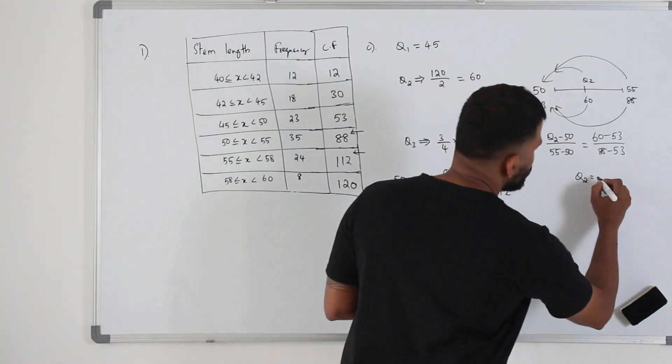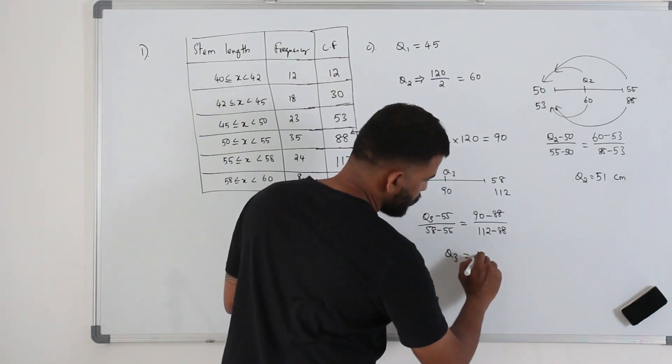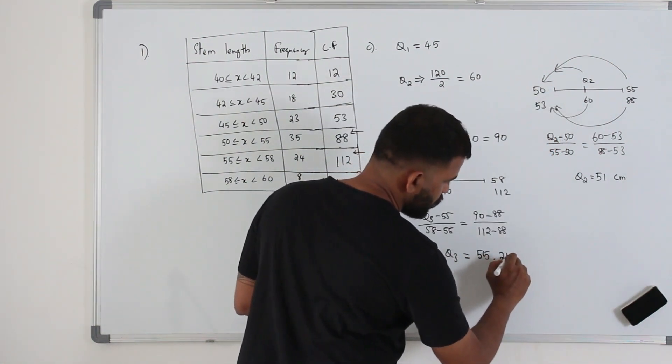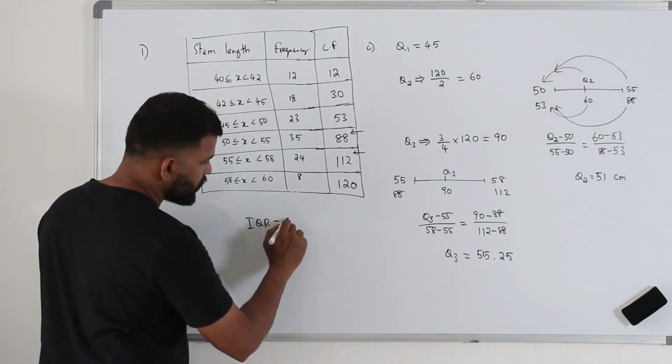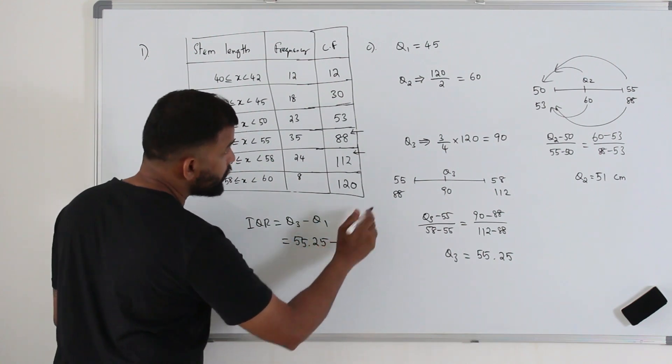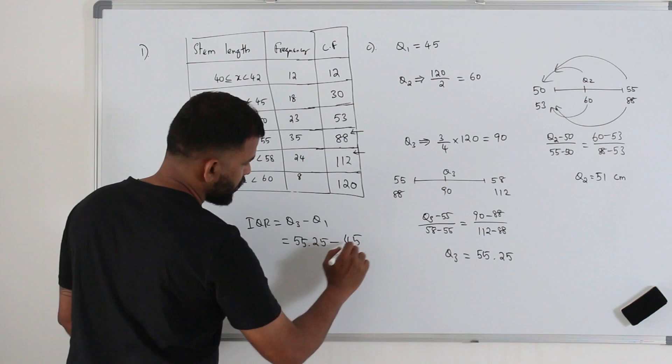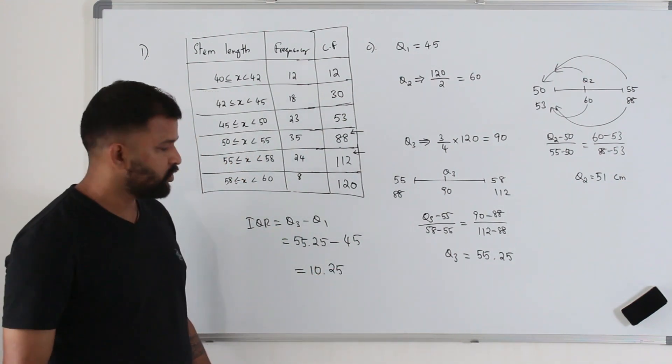So Q2 is 51 centimeters. Q3 is 55.25. So the interquartile range IQR is basically upper quartile minus the lower quartile. So 55.25 minus 45. You get 10.25. That's the interquartile range.